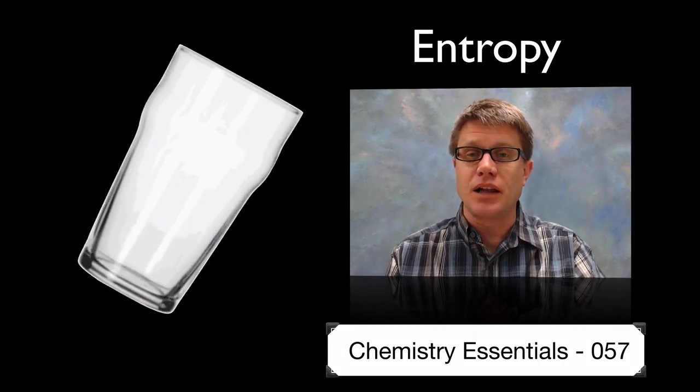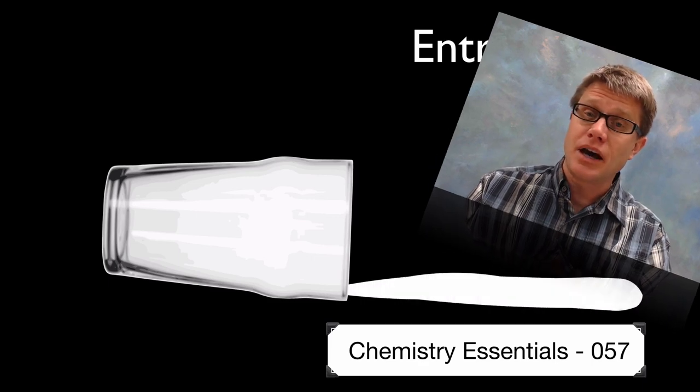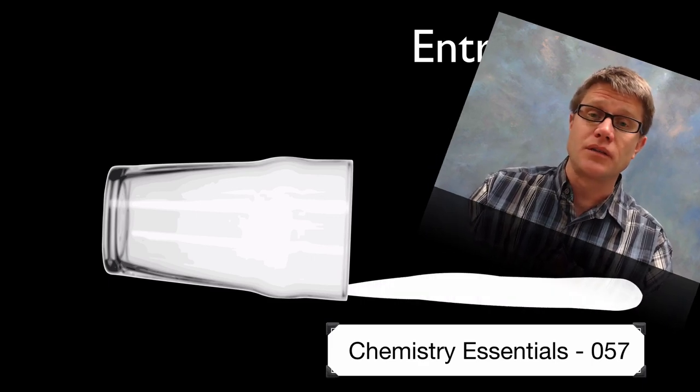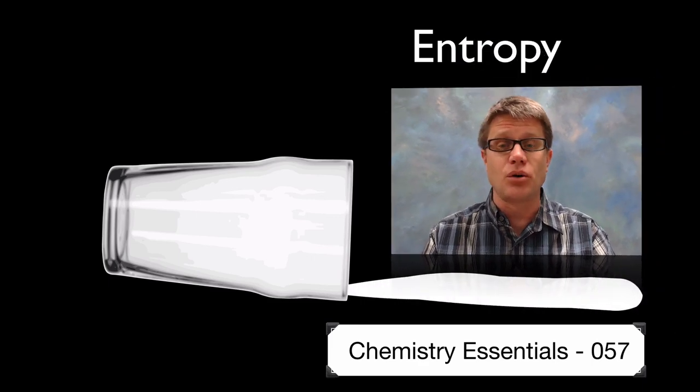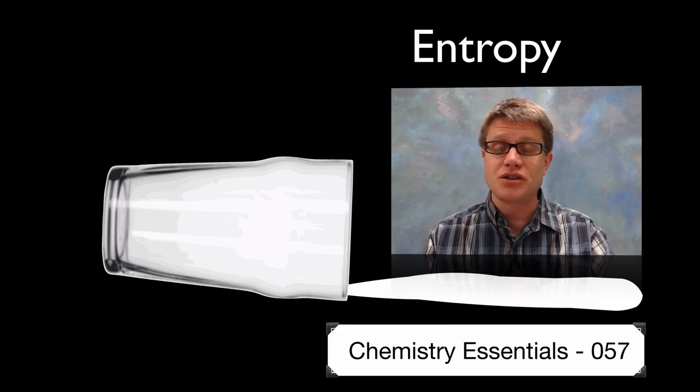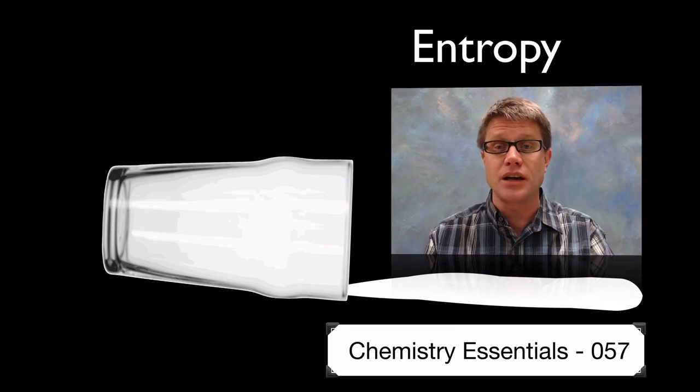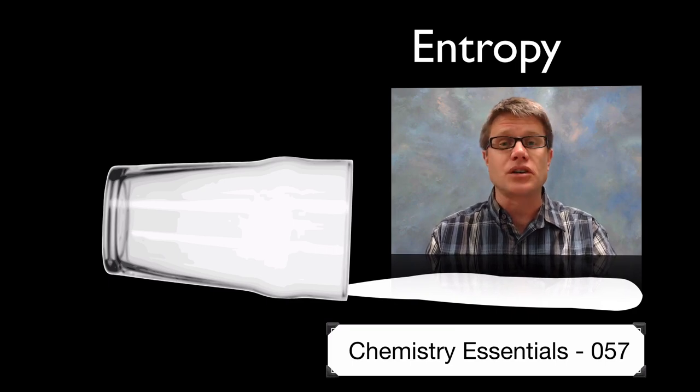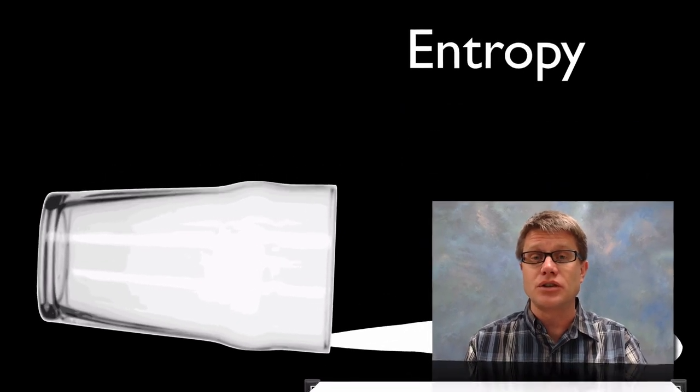So imagine I had a little bit of milk in a glass and I were to spill it. I will have increased the entropy of this isolated system. And there's an old saying that you shouldn't cry over spilled milk. I totally disagree with this. You should cry over spilled milk. And the reason why is it's an irreversible process. In other words it's not just going to magically move back into the glass. You've increased the entropy and it's going to take a lot of work to put it back where it was.